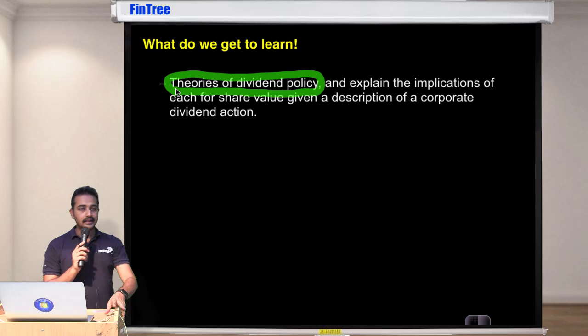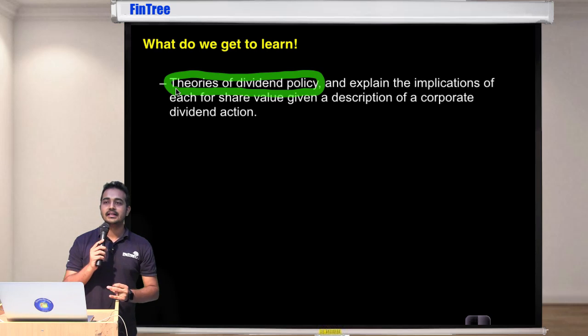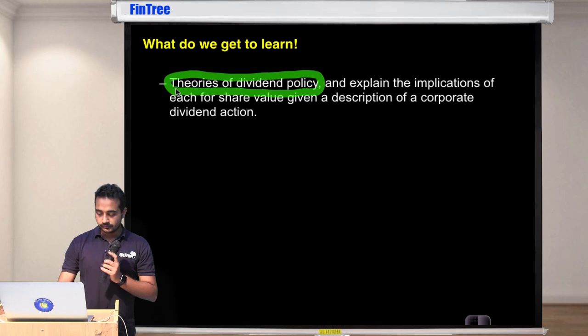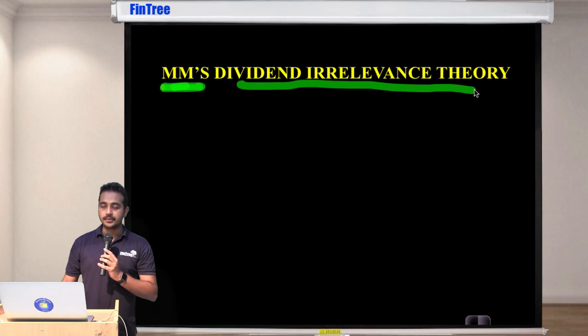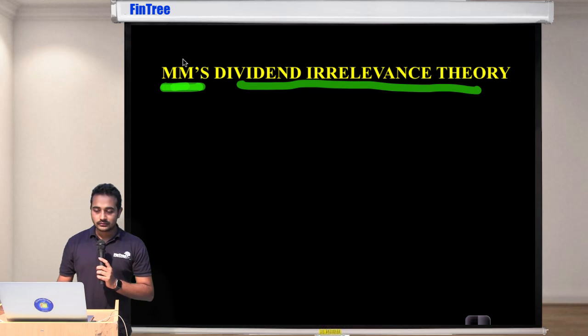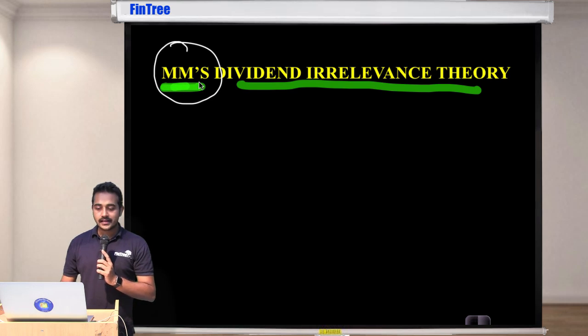Corporate finance authors at level two like Modigliani Miller way too much, so we will have a MM theory again. Theories of dividend policy - the first one is MM's dividend irrelevance theory. It works like this under the same restrictive assumptions that we saw in the capital structure reading.